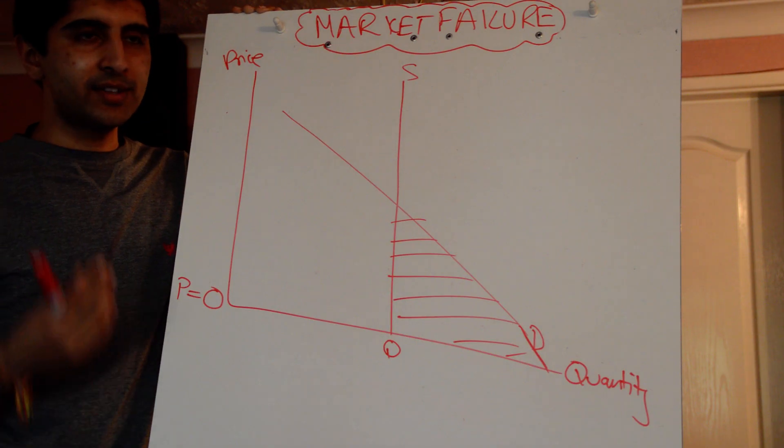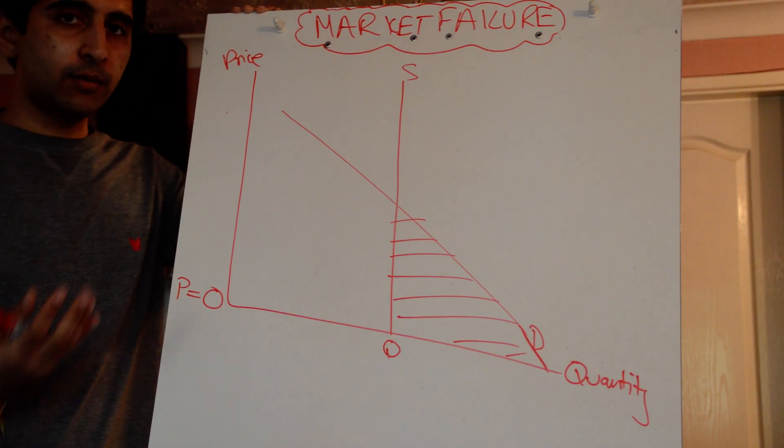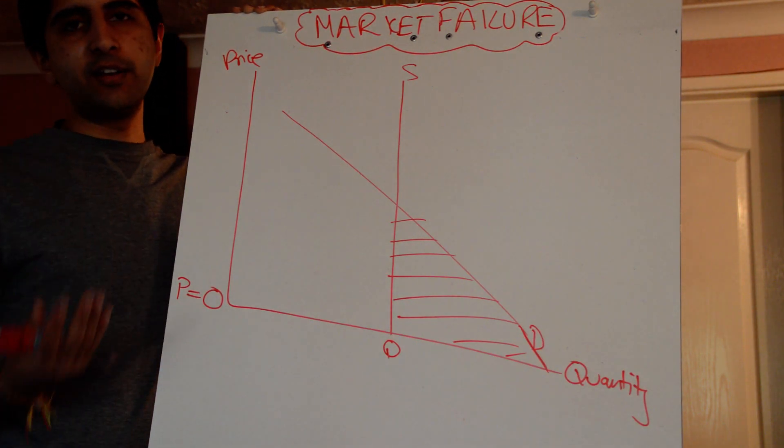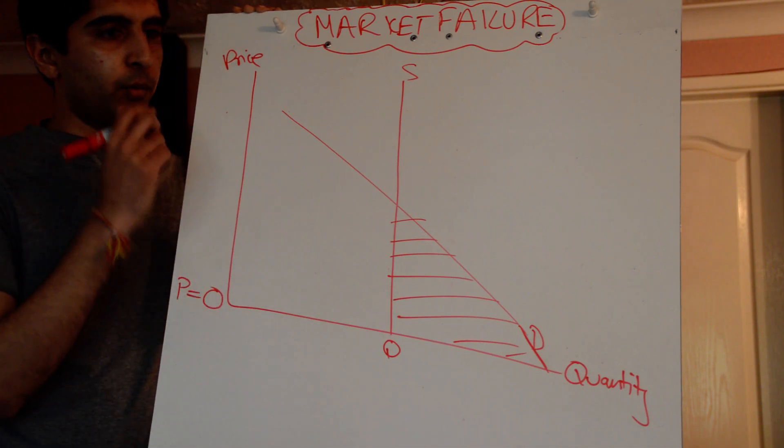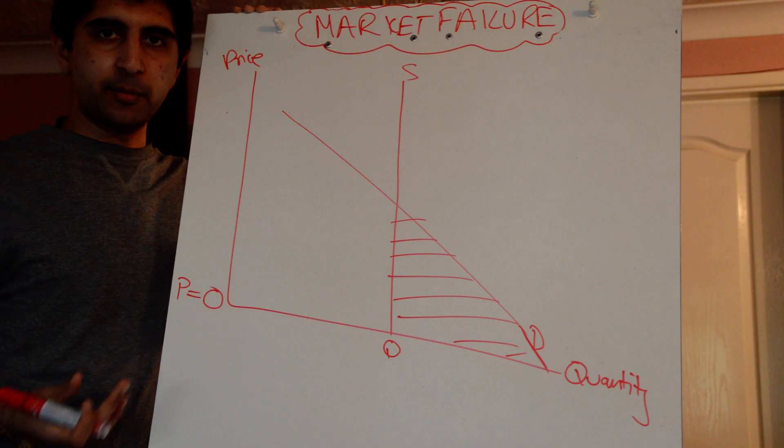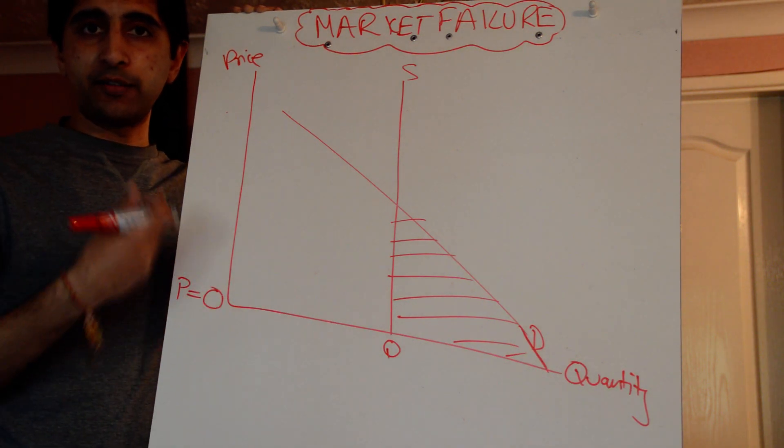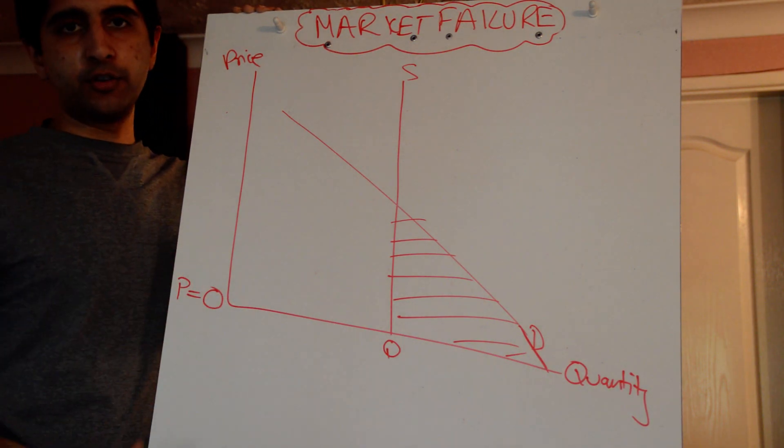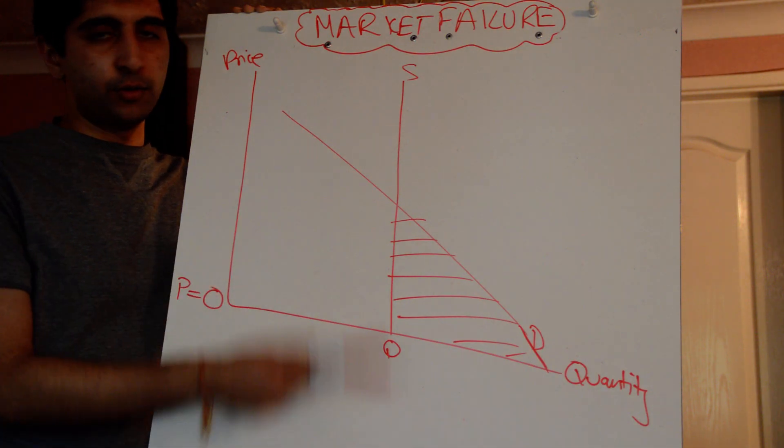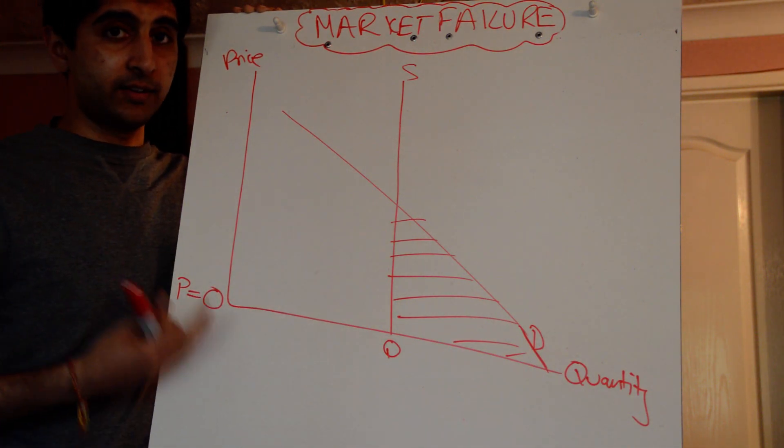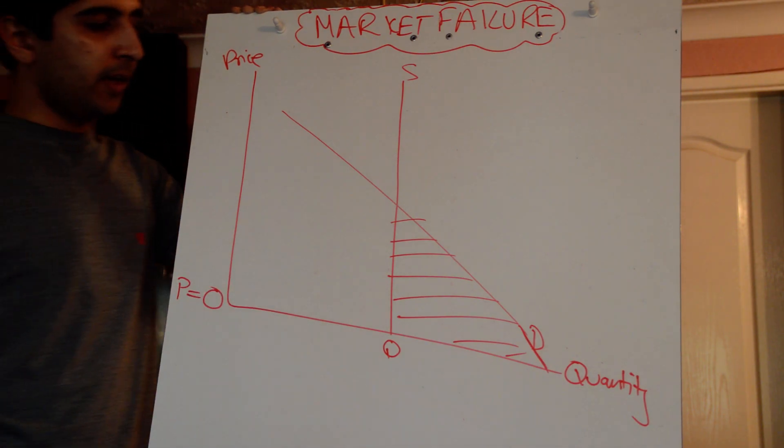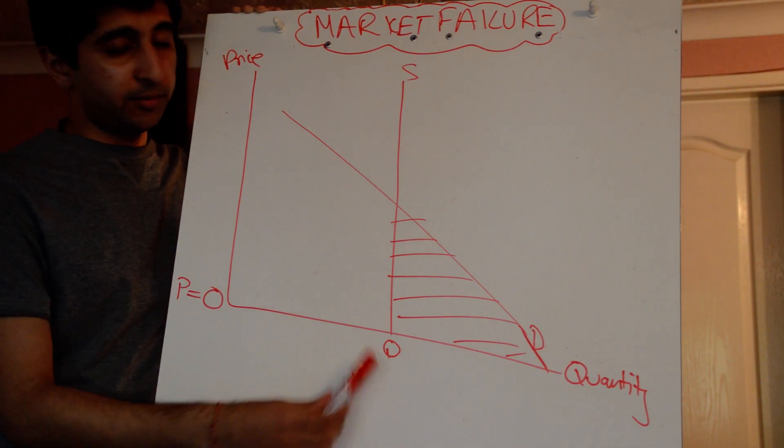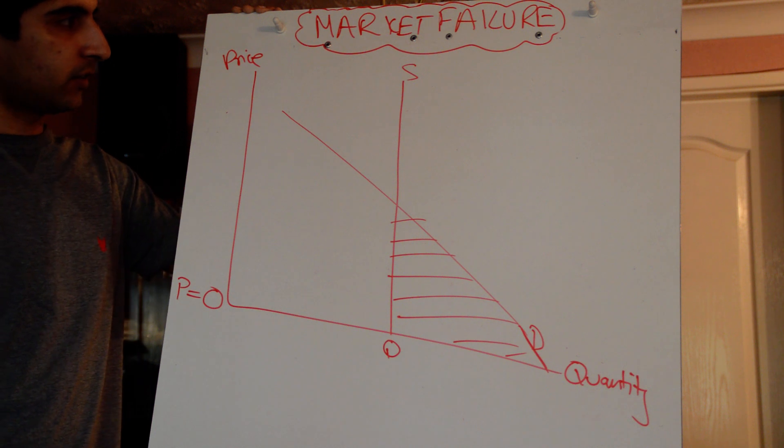Another problem we have is that state-run organizations, state-run departments, tend to be very inefficient. And this could be a cause of government failure. We know that because there's no profit motive, the costs can spiral out of control. The inefficiencies can go out of control. And therefore the effects of these organizations might not be as great as it could be in the private sector. So all problems with state provision there. But if there's a missing market, at least something is being provided. So that's something you can evaluate.